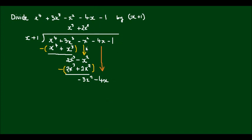Okay, so the next step. What do I multiply x by to get minus 3x squared? And the answer to that would be minus 3x. So minus 3x times x will give me minus 3x squared. And minus 3x times one will give me minus 3x.